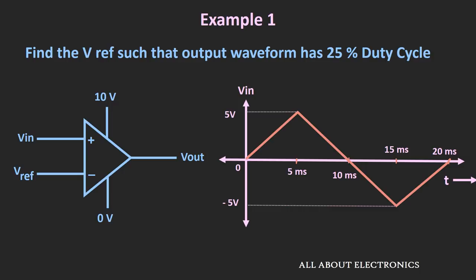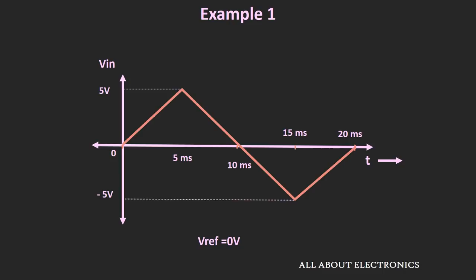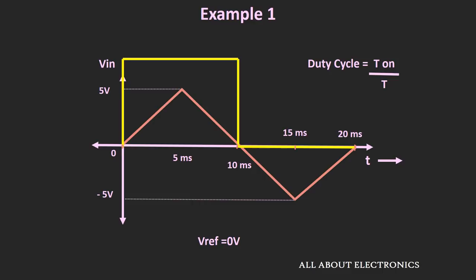First, let us assume the reference voltage is equal to 0V. In that case, whenever the input signal is greater than 0V, the output of the comparator will be high. And whenever it is less than 0V, the output will be low. So the output voltage will look like this — for 50% of the time the output is high and for 50% of the time it is low, giving a duty cycle of 50%.